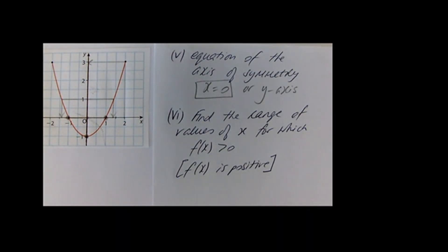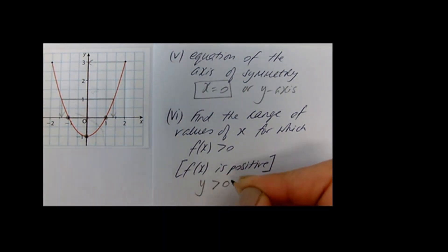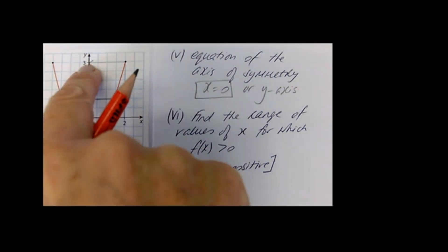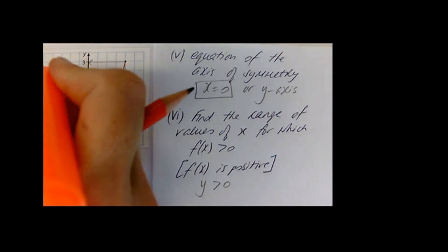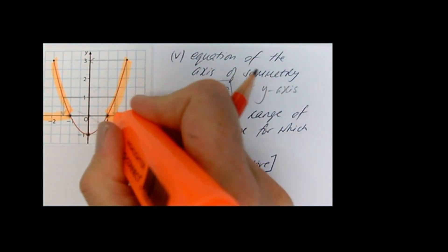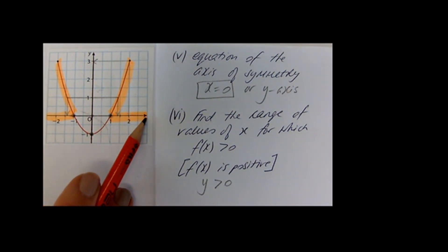Last question: find the range of values of x for which f of x is greater than 0 — in other words, where f of x is positive. That's where the y values are greater than 0, which are all above the x axis. Those parts of the graph above the x axis are the ranges of x values on either side. The range of values of x that give those positive y values are these x values here and these x values here.